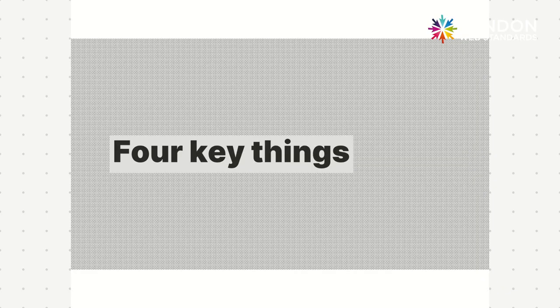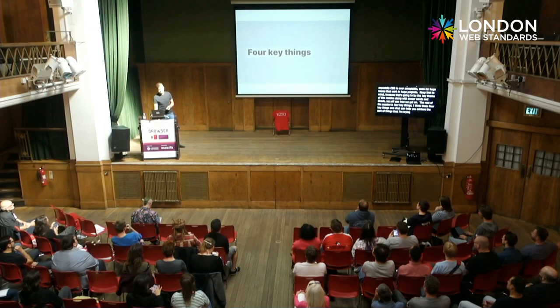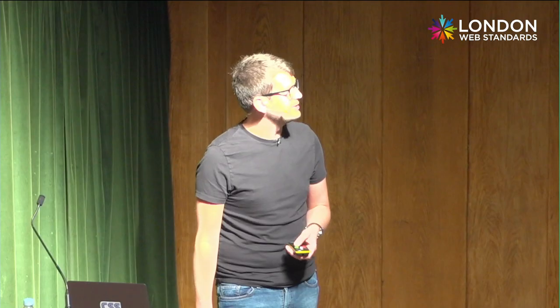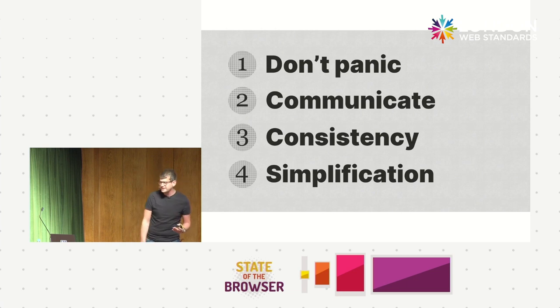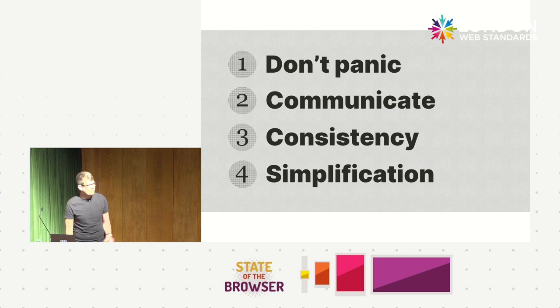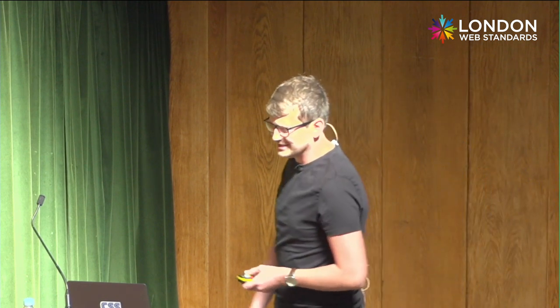I'm breaking the rest of the session into four key things that can help you achieve what I'm talking about today. You'll get a little progress bar so you can see just how much longer you've got to endure me for. Here they are: don't panic, communicate, consistency, and simplification. I could package this up as DCCS and get a load of upvotes, but let's actually talk about the content.